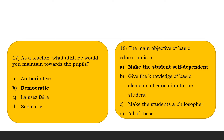As a teacher, what attitude would you maintain towards the pupils? The main objective of basic education is to make the student self-dependent. Students may be self-dependent — this is the main objective of basic education.